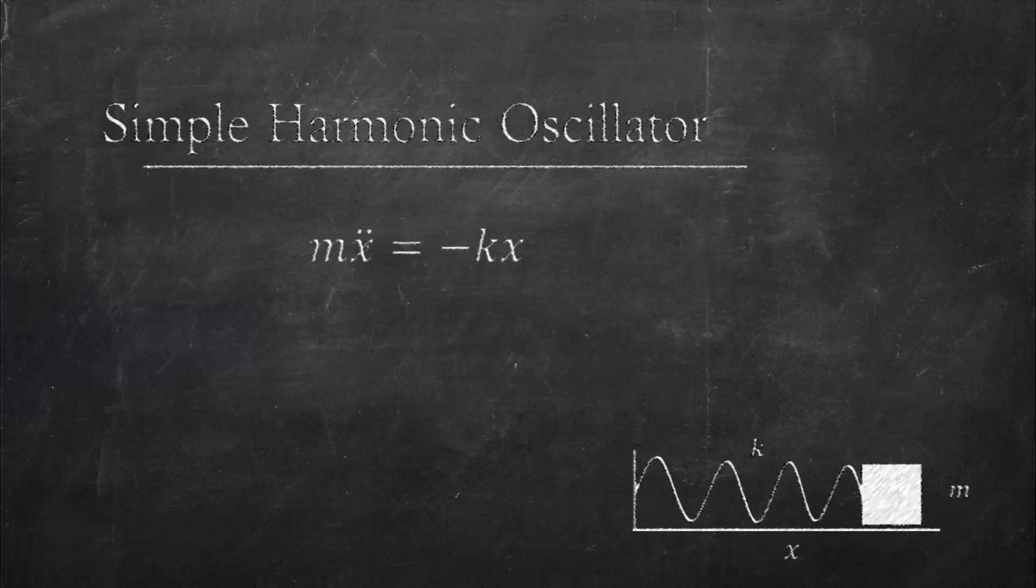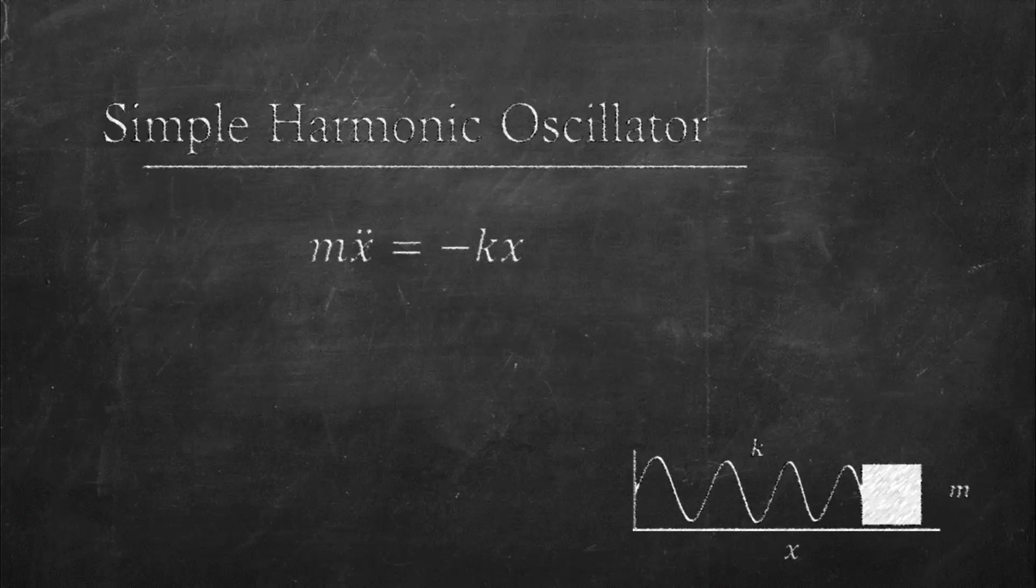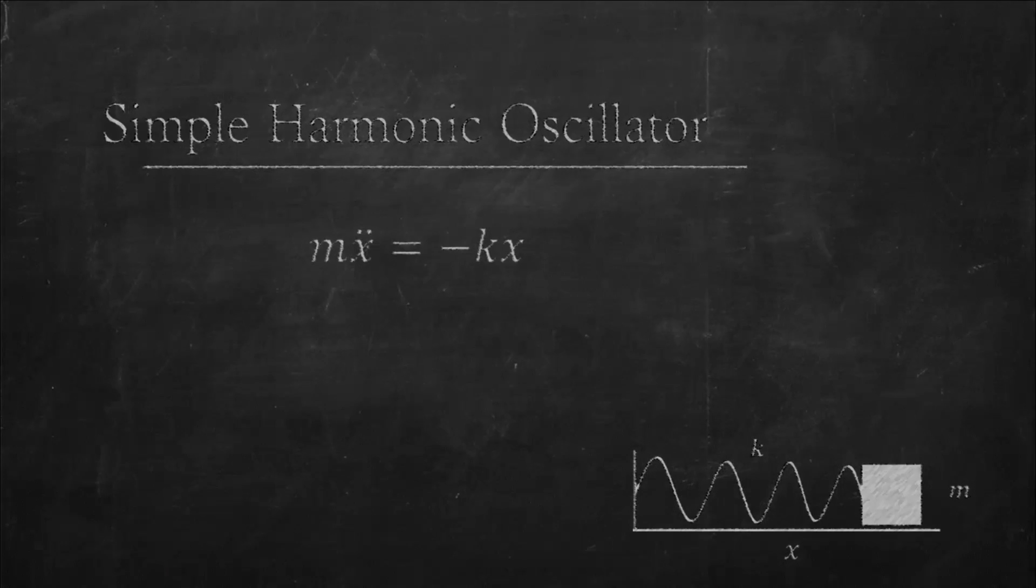We will first examine a linear system's phase orbits. The simple harmonic oscillator, given by mx double dot equals negative kx, is a linear system familiar to every physicist.